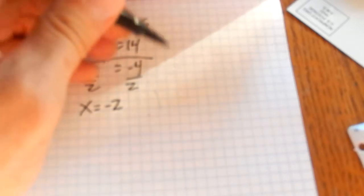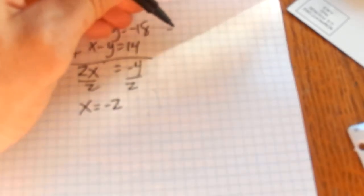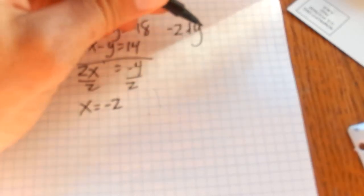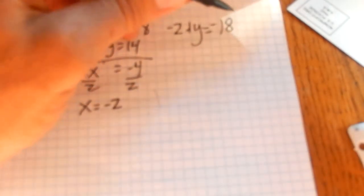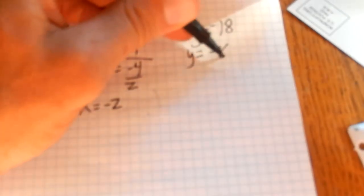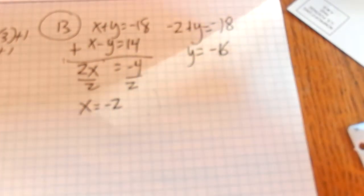So x plus y is negative 18. So x is negative 2. Equals negative 18. Add 2 to both sides.